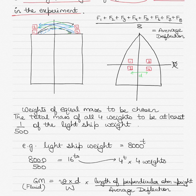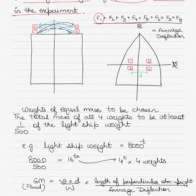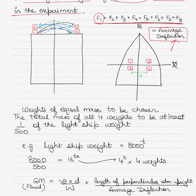Usually four weights of equal mass are used in the experiment. As shown in the figure, the four equal-mass weights are shifted one by one from port to starboard and starboard to port. Each time, the deflection of the pendulum bob is recorded, and these are averaged to obtain the average deflection.